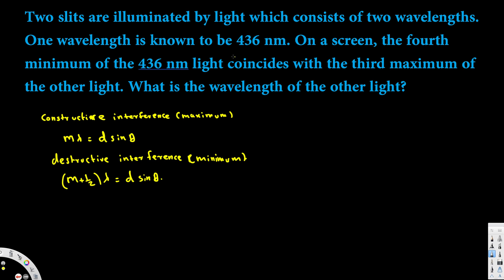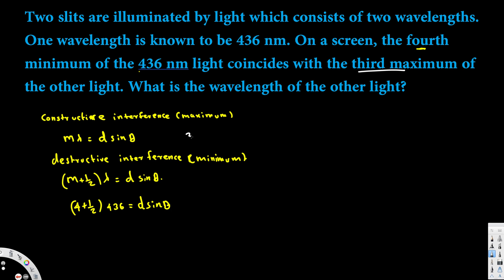The given condition is destructive interference because that is the minimum, and it is the fourth minimum, so the m value is 4. Plugging in: (4 + ½)·436 = d·sinθ. For the maximum, the condition is m·λ = d·sinθ, and since it is the third maximum, we have 3λ = d·sinθ.